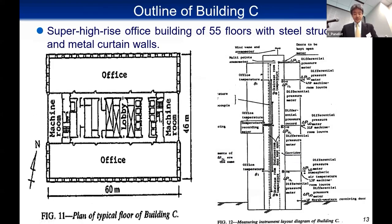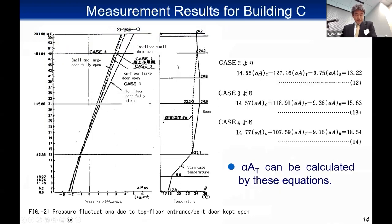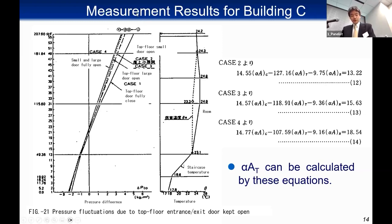The third example is Building C, a super high-rise office building of 55 floors with steel structure and metal curtain walls. This slide shows the photo and the plan for the typical floor of Building C. Again, you can see three types of vertical pressure difference distributions between inside and outside by changing the opening area of top-floor doors. By solving the simultaneous linear equations in three unknowns, we can get the air tightness — equivalent opening area of standard floors, alpha AT.